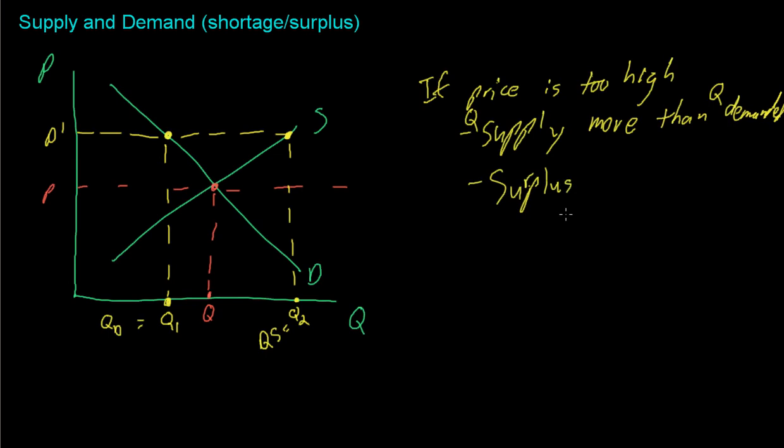So in this diagram right here we would have a surplus of Q2 minus Q1. That would just be the difference between Q2 and Q1, which we could represent by this little area right here. So that would be our surplus.